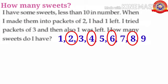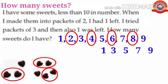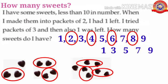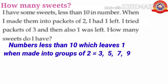Which are the remaining numbers? Yes, one, three, five, seven and nine. Here, one cannot be grouped into two because one is less than two. When we grouped three sweets into two, one is left. When we grouped five sweets into two, one is left. When we grouped seven sweets into two, one is also left. When we grouped nine sweets into two, one is also left. So children, numbers less than ten which leave one when made into groups of two equals 3, 5, 7 and 9.